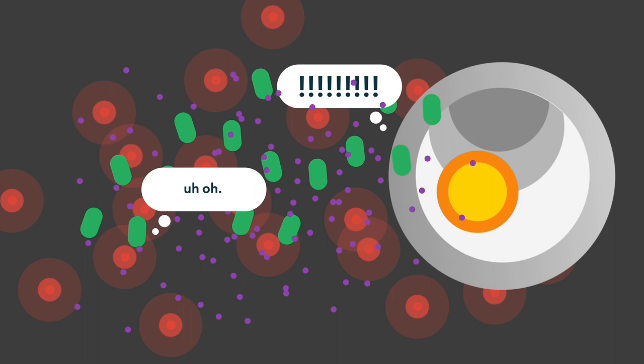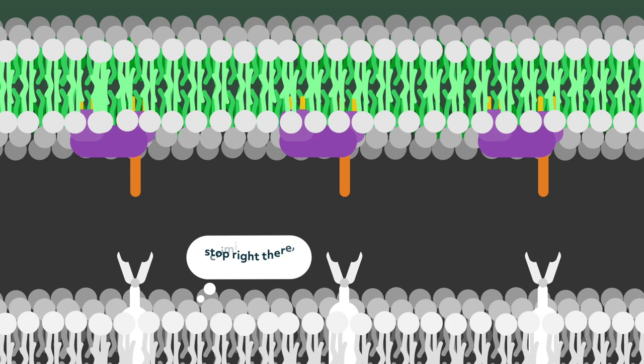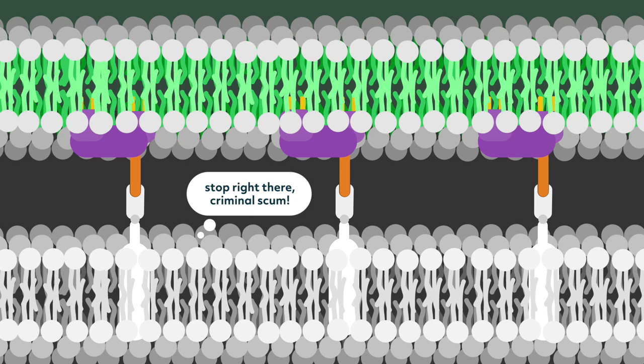One of the first cells to arrive are phagocytes, cells that eat and digest invading pathogens. Once the phagocytes find the invaders, the C3 Convertase acts as a sort of glue that makes it easy for the phagocytes to grab onto the invader and destroy it.